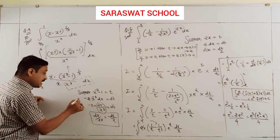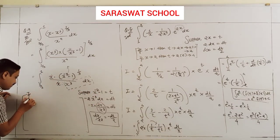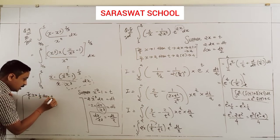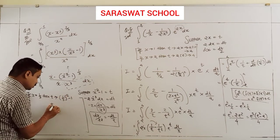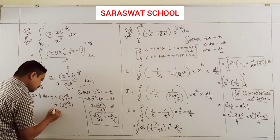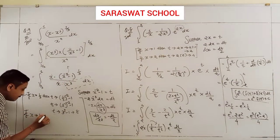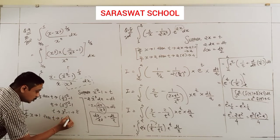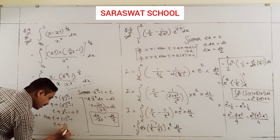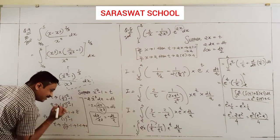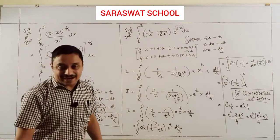Changing limits: if x tends to 1/3, then t tends to (1/3)⁻² - 1 = 9 - 1 = 8. If x tends to 1, then t tends to 1⁻² - 1 = 1 - 1 = 0. So new limits are from 8 to 0. Using substitution and dt, proceed to calculate.